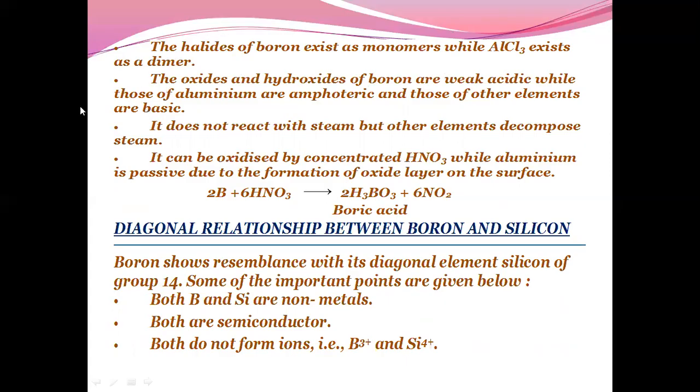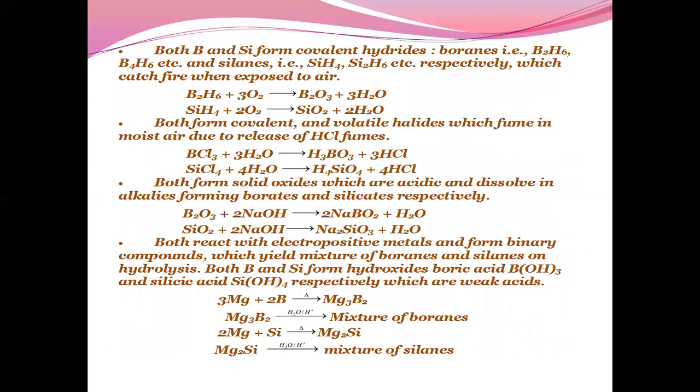The diagonal relationship: Boron has a diagonal relationship with silicon. Both boron and silicon are non-metals. Both are semiconductors which do not form ions of B3+ or Si4+. Both boron and silicon form covalent hydrides, boranes like B2H6, B4H10, and silanes like SiH4, Si2H6 etc. respectively, which catch fire when exposed to air. Both form covalent and volatile halides which fume in moist air due to release of HCl fumes. Both form solid oxides which are acidic and dissolve in alkalies forming borates and silicates respectively. Both react with electropositive metals and form binary compounds which yield mixtures of boranes and silanes on hydrolysis. Both boron and silicon form hydroxides, boric acid and silicic acid respectively, which are weak acids.